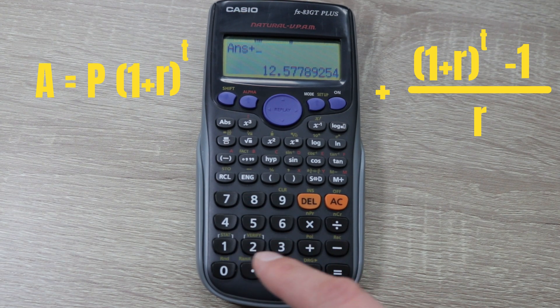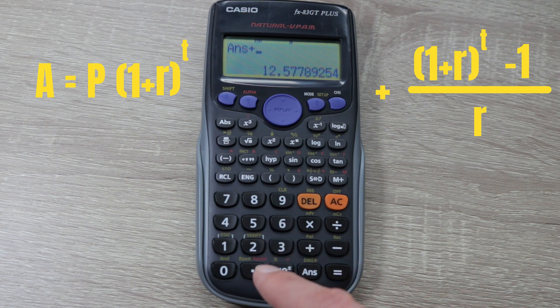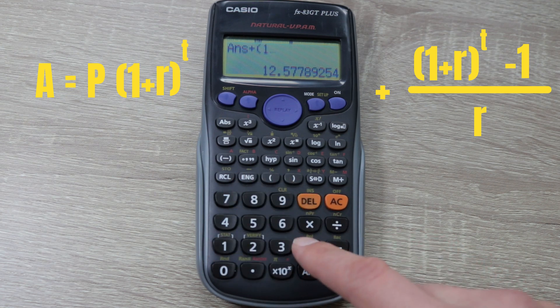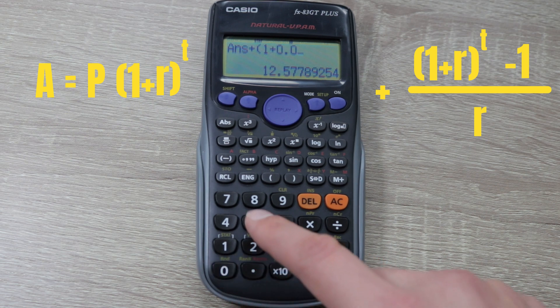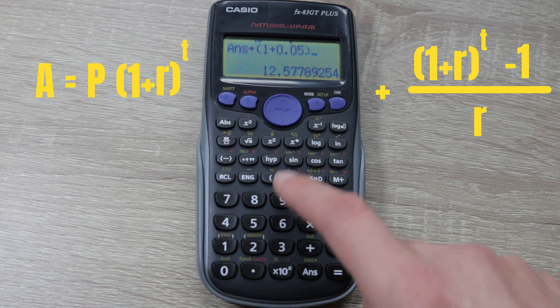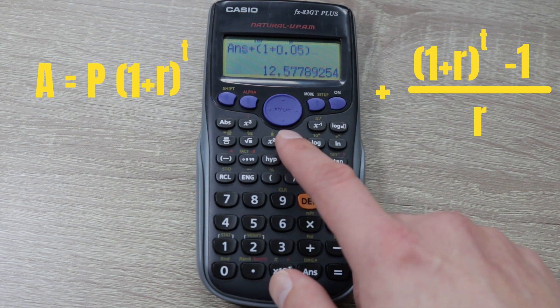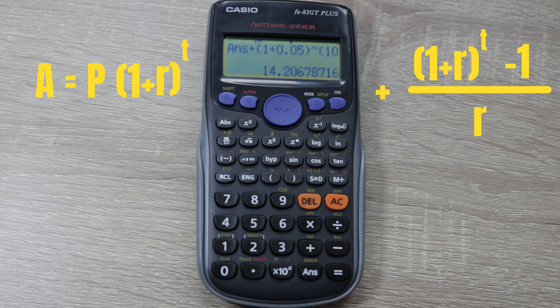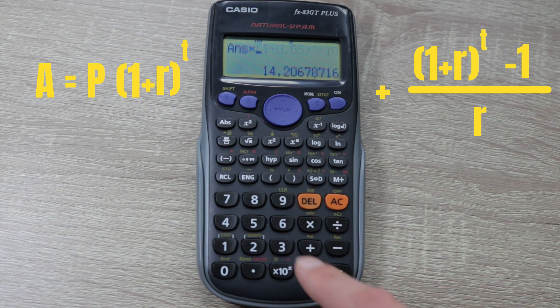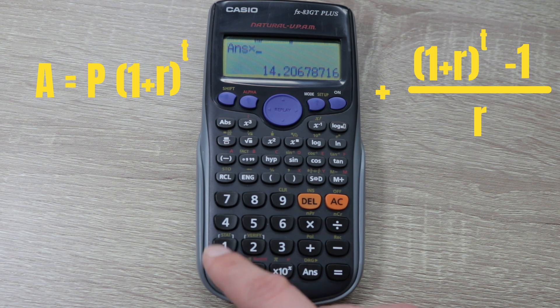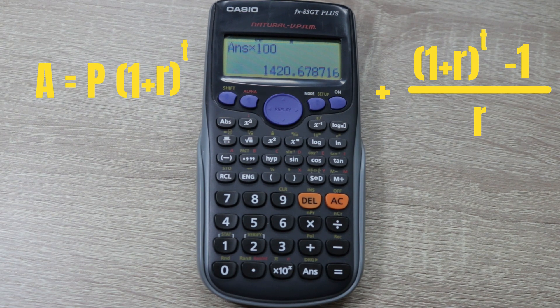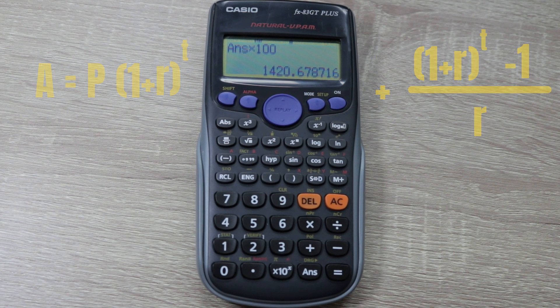Then we need to do the second part of this equation. We add, then in brackets 1 plus 0.05, close brackets, to the power of 10 years, and then we times that answer by our principal amount 100 to give us 1,420.68.